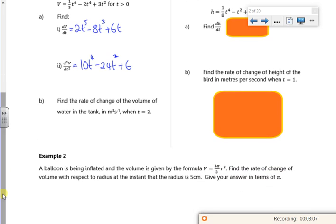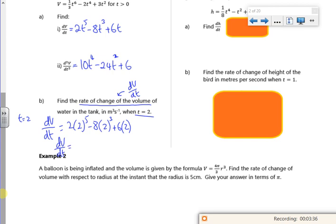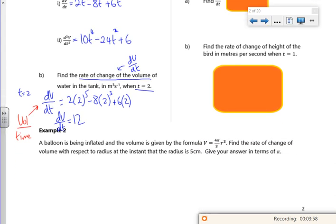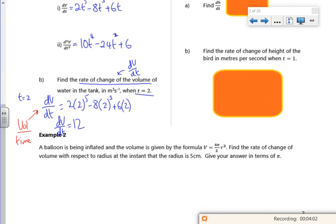So the next bit says find the rate of change of volume. So the rate of change of volume is dv by dt when t is 2. So dv by dt will be 2 lots of 2⁵ minus 8 lots of 2³ plus 6 lots of 2. So stick that in your calculator, and it comes out as 12. Now I've got to think about the units. This is volume over time. My volume is meters cubed, and my time is seconds. So meters cubed per second or second to the minus 1.